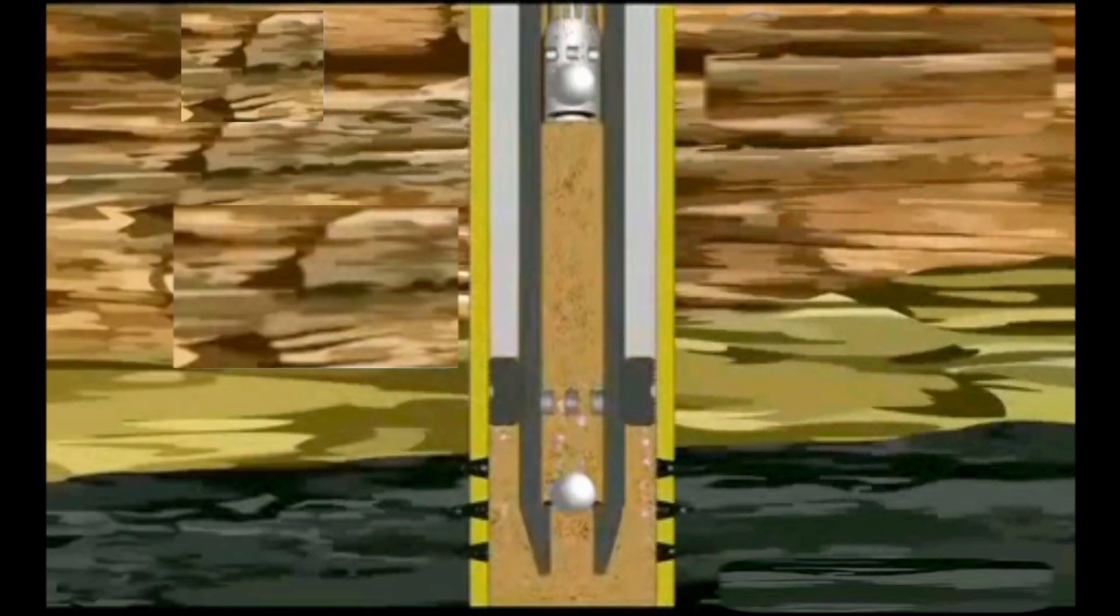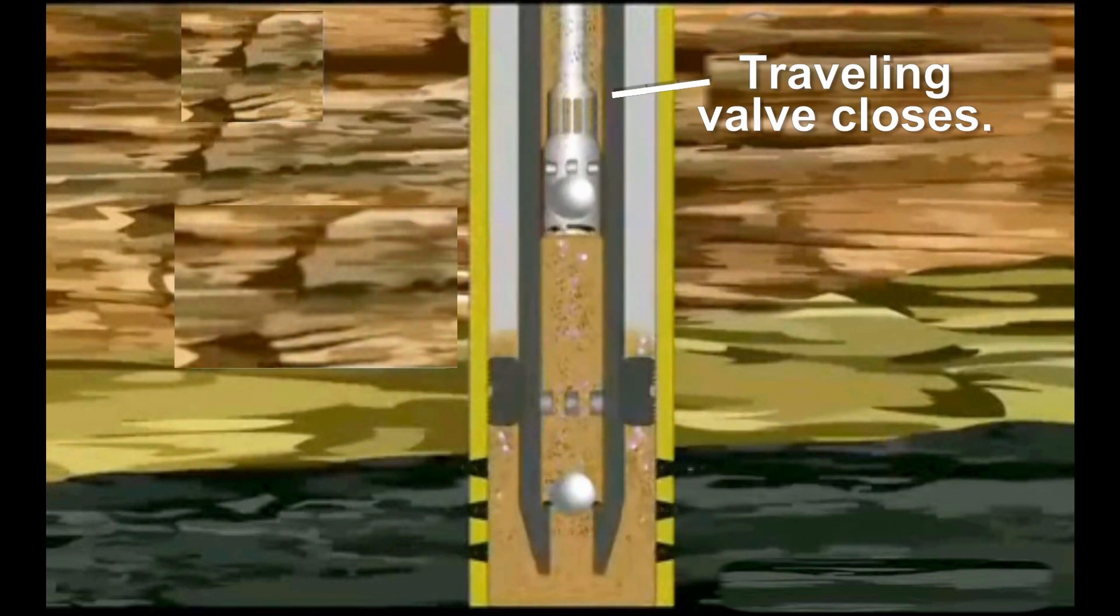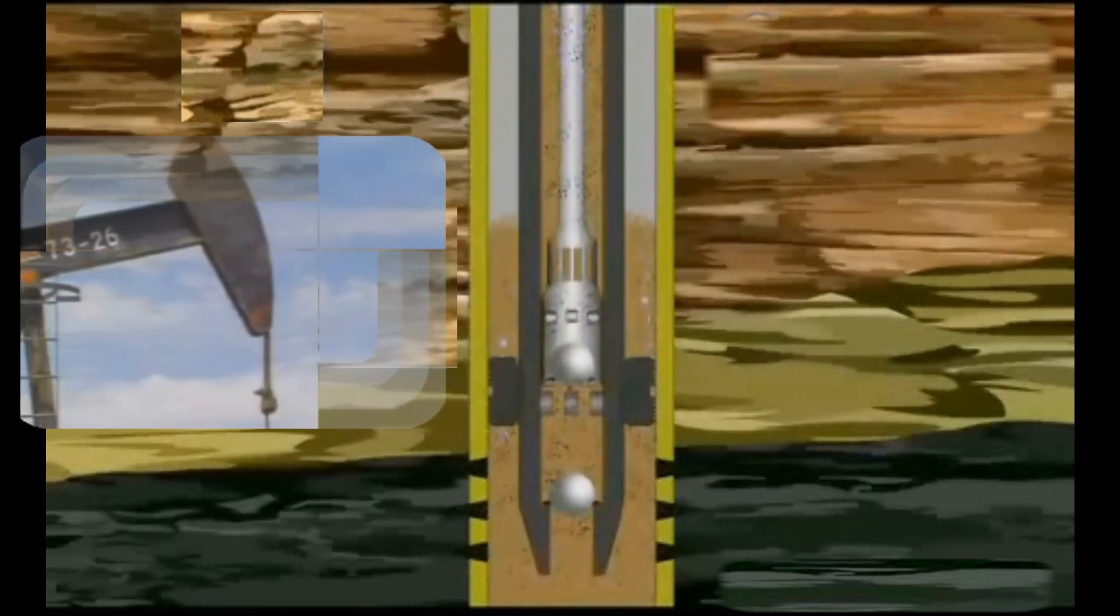Again, when the plunger reaches its uppermost height, the traveling valve closes and as the plunger begins its downward movement, the standing valve opens, allowing the barrel to be filled. These steps are repeated as the horsehead moves up and down, pumping the oil to the surface.